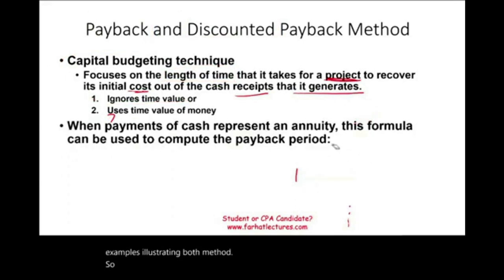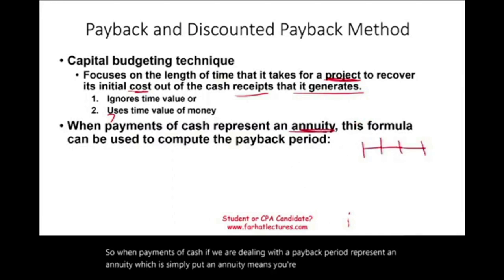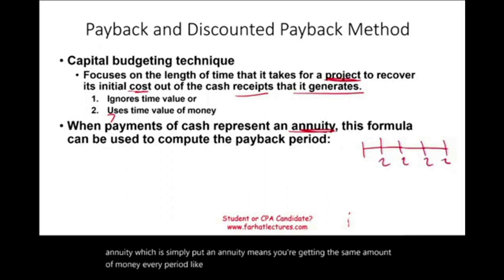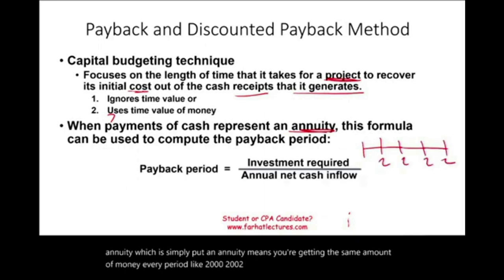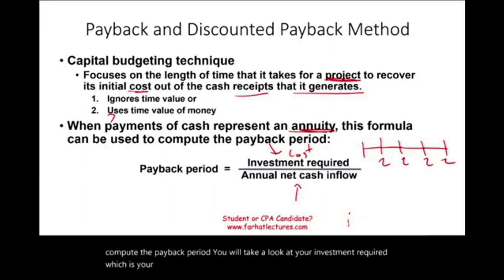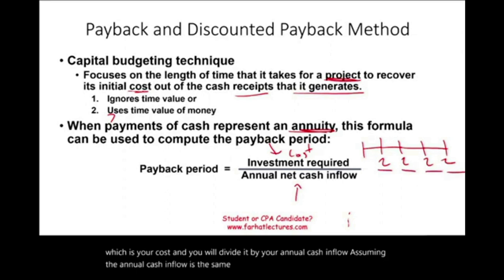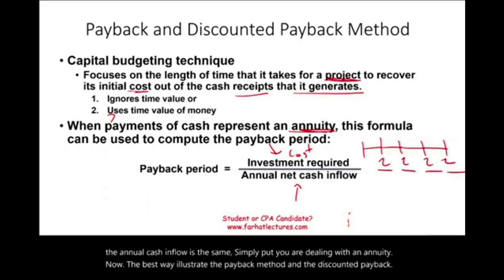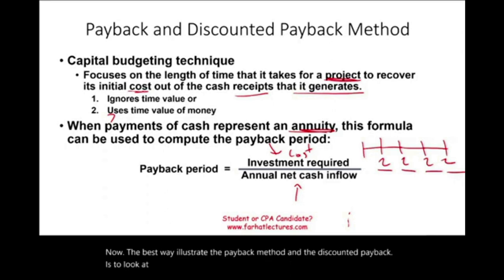When cash payments represent an annuity — meaning you're getting the same amount of money every period, like $2,000 each period — then it's easy to compute the payback period. You take your investment required, which is your cost, and divide it by your annual cash inflow, assuming the annual cash inflow is the same. The best way to illustrate the payback method and the discounted payback method is to look at examples.